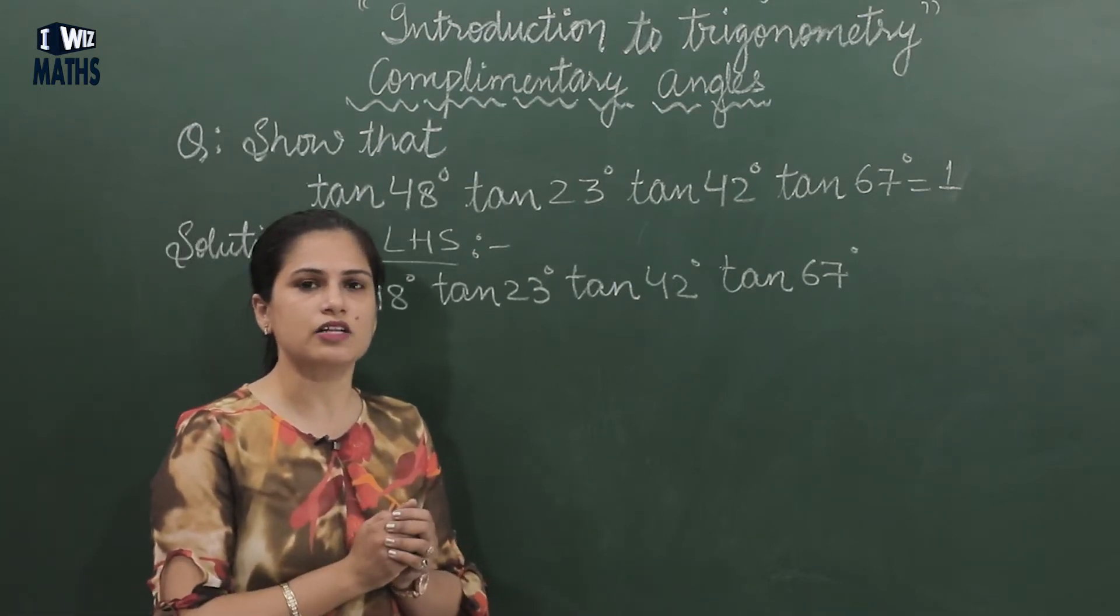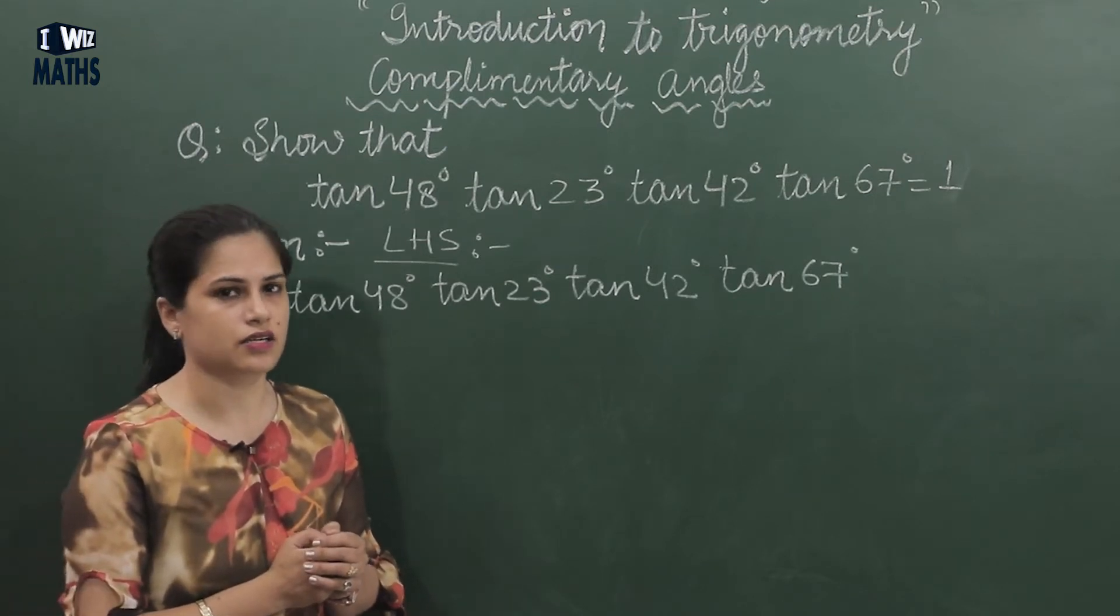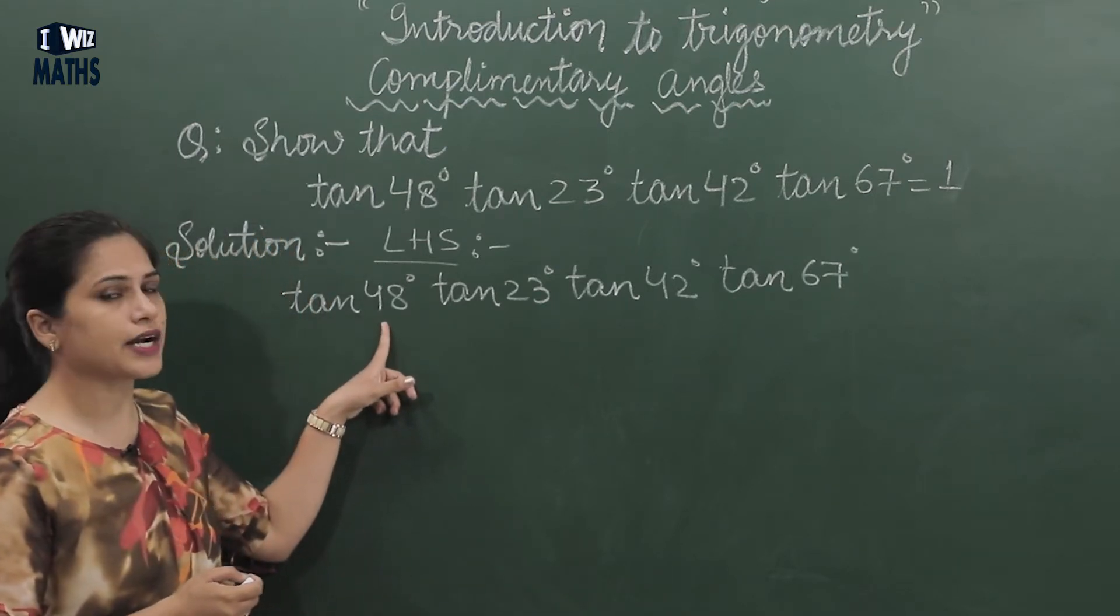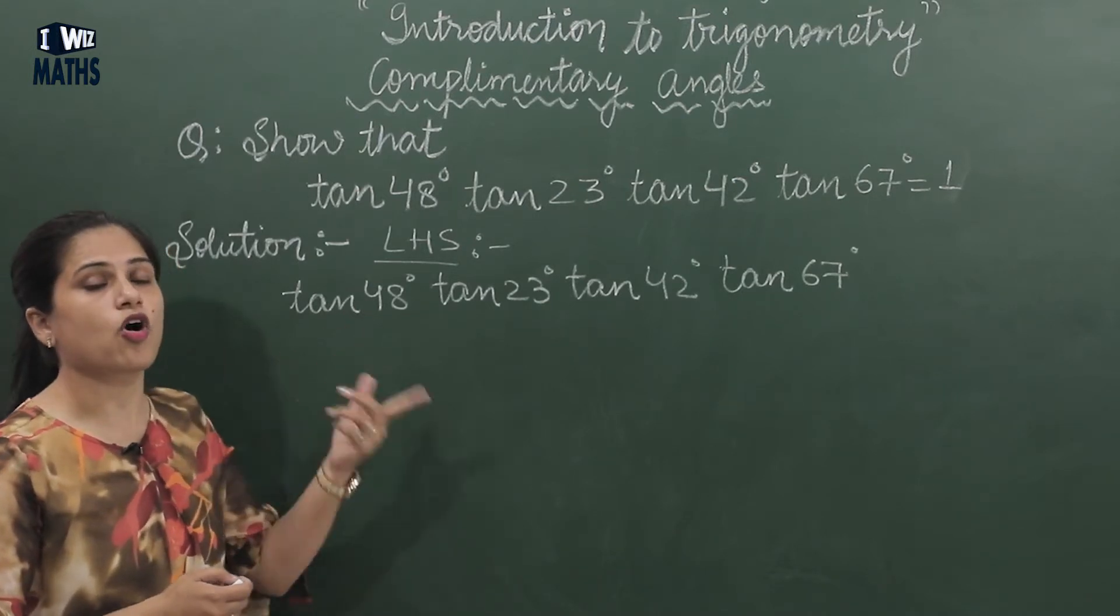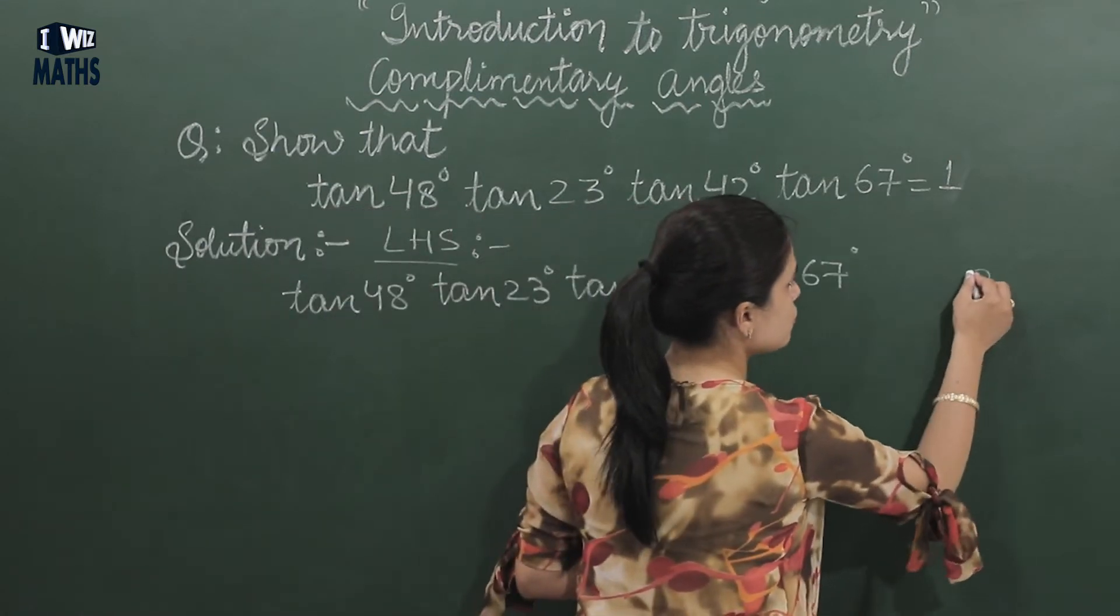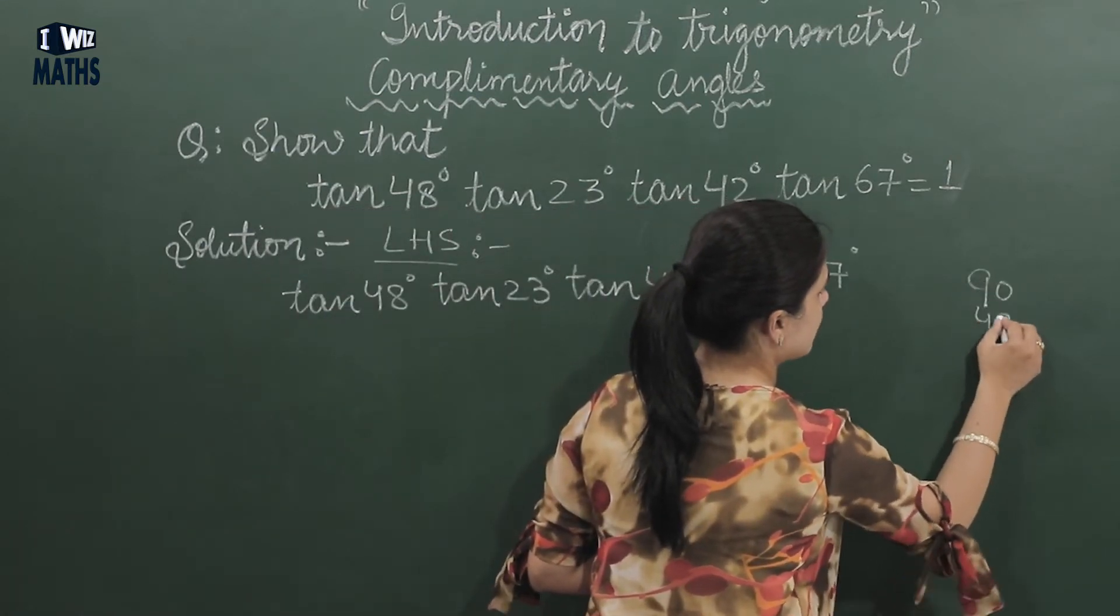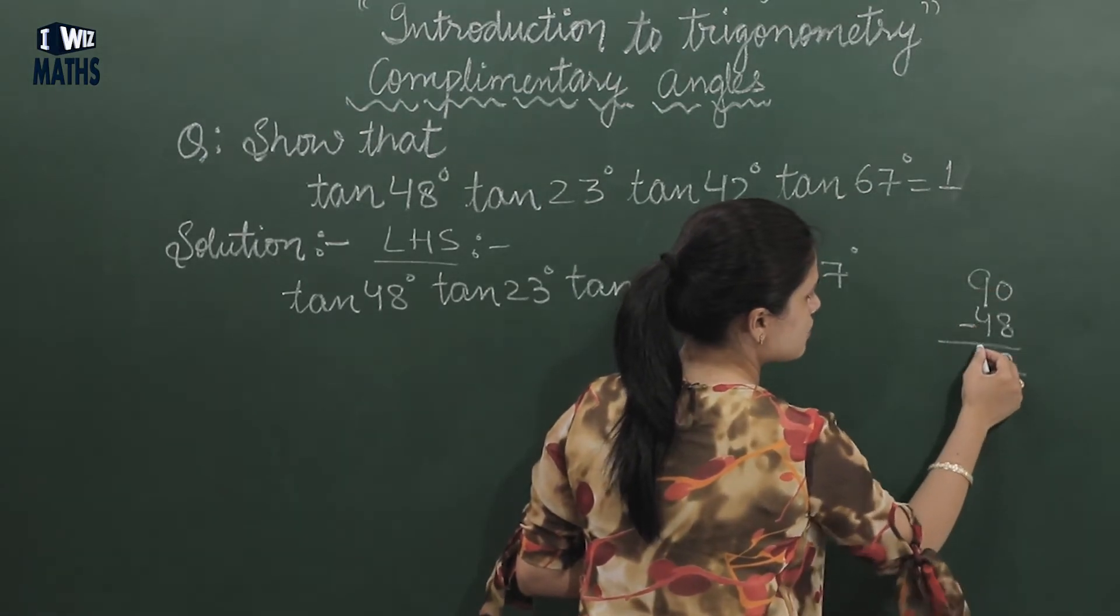Now complementary angles you already know are angles whose sum is 90 degrees. So if I take tan 48° first, then we'll calculate 48 degree's complementary angle. If I calculate in rough, 90 minus 48, how much? 10 minus 8 is 2, and then 8 minus 4 is 4.